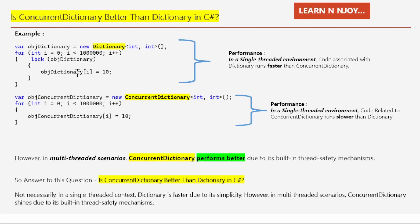Now let's discuss single-threaded performance. I have a simple code snippet that adds five million items to both a Dictionary and a ConcurrentDictionary. When executed, we find that Dictionary is faster in a single-threaded context because it doesn't have the overhead of ensuring thread safety. ConcurrentDictionary enforces thread safety by default, making it slower in single-threaded environments. However, in multi-threaded scenarios, ConcurrentDictionary performs better due to its built-in thread-safety mechanism. So ConcurrentDictionary is not necessarily always better than Dictionary.